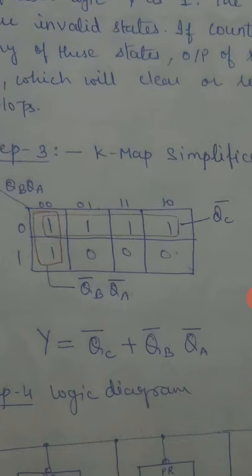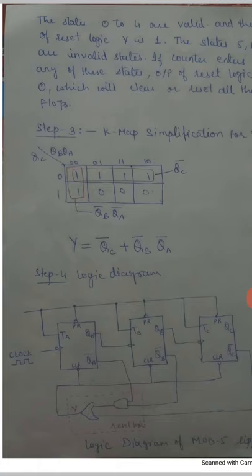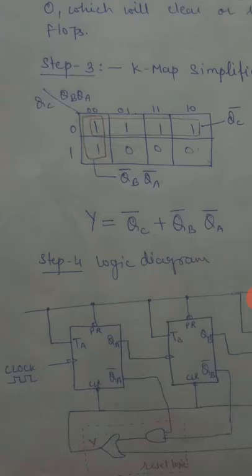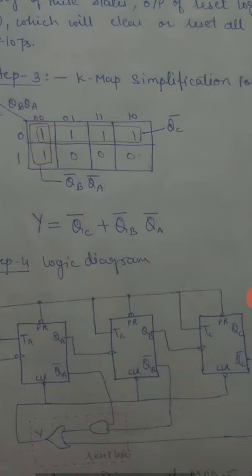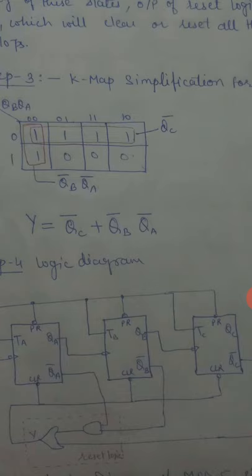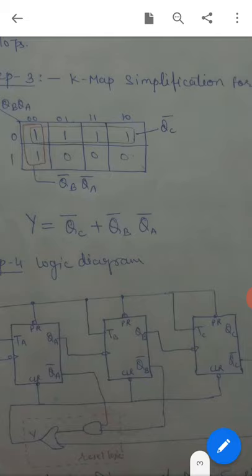This expression we have to apply to the clear signal. We don't have to use the preset. So we have the preset and all the T flip-flops with T inputs connected to logic 1. The clear signal has Y applied to it, because when Y is 0, the clear input causes every flip-flop to be cleared to 0. So Y will be 0, and all the flip-flops will be 0,0,0. This means when the counter reaches states 101, 110, or 111, the counter will reset back to 0,0,0.